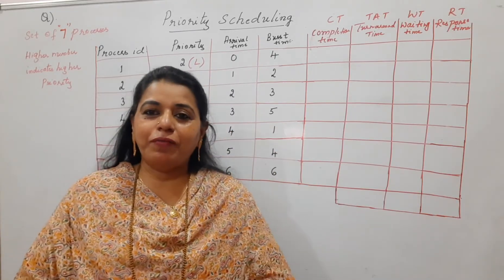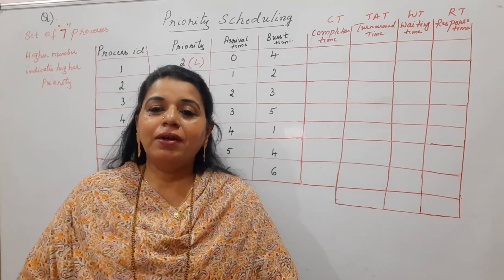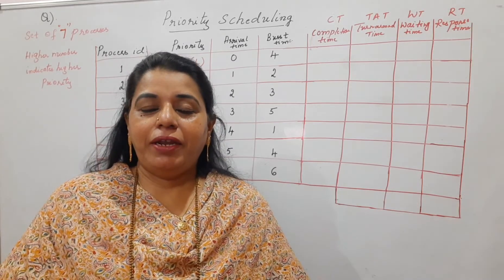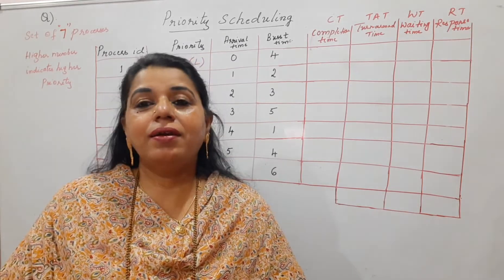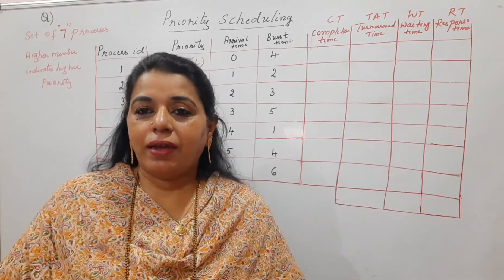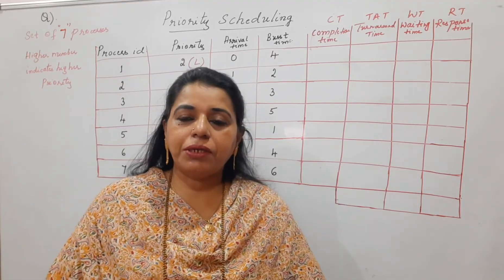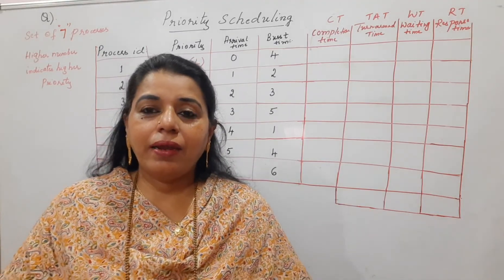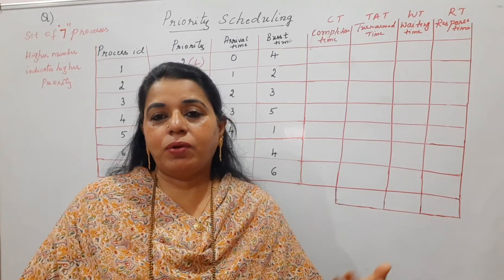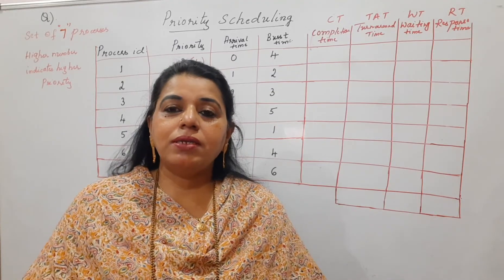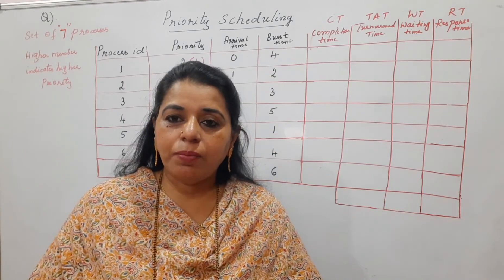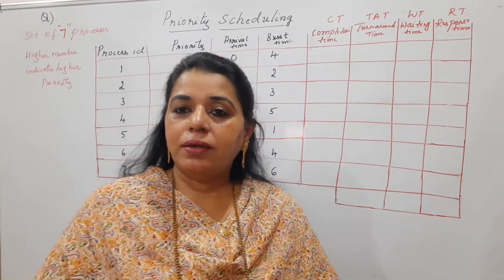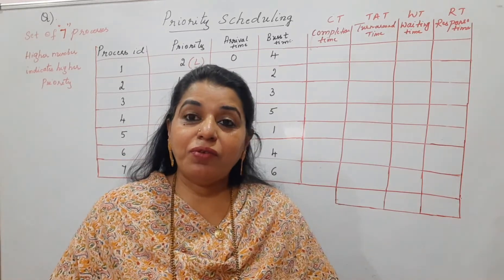The term priority is something we are all very familiar with — we give more importance to a particular activity or event when it has a higher priority. In round robin scheduling, the system treats all processes equally important, and the main criteria was the time quantum, so the same amount of time is used by all processes.